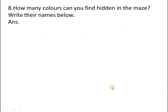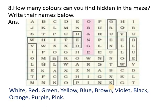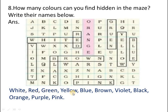Next: how many colors can you find hidden in the maze? Write their names below. In this table there are different letters, but there are some hidden words which are names of different colors. I have tried to circle them out. You have to make a circle on them and write down all the colors you found from the maze. They are: white, red, green, yellow, blue, brown, violet, black, orange, purple, and pink. Most of the colors are there in the table.